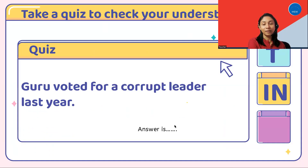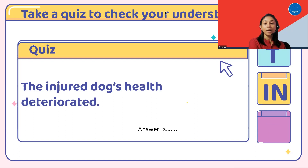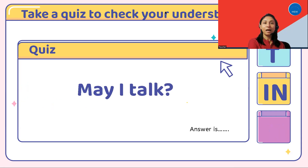Now let's take a quiz to check your understanding. First: Guru voted for a corrupt leader last year — transitive or intransitive? If your answer is transitive, you're correct. Second: The injured dog's health deteriorated — the answer is intransitive. If your answer is correct, give yourself a pat on the back. Third: May I talk? — if your answer is intransitive, you're right.